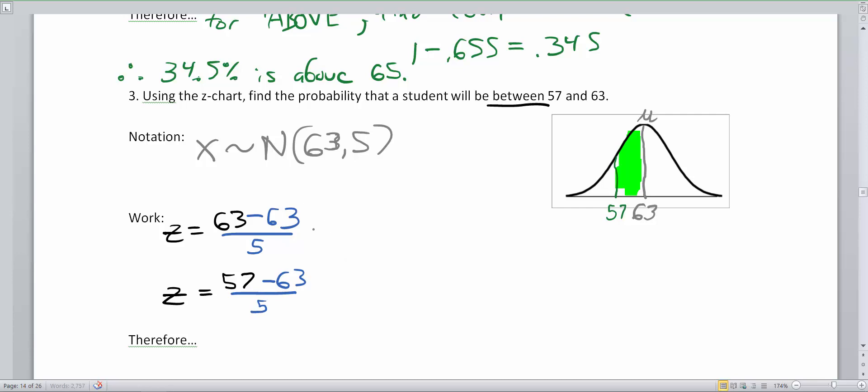Let's do the top problem. I'll make the top problem red. 63 minus 63 is 0. 0 divided by 5 is 0. So my z-score is 0. Now I'm going to do the bottom problem in green. 57 minus 63 is negative 6 divided by 5. Negative 6 divided by 5 is negative 1.2. So I'm going to look up both of these on the table.